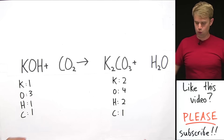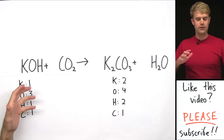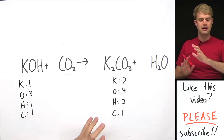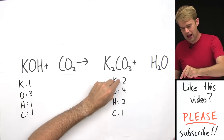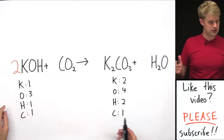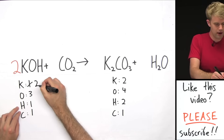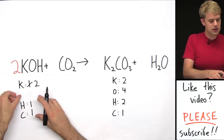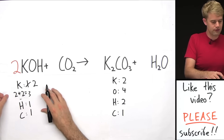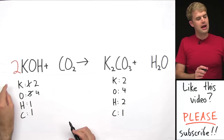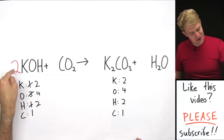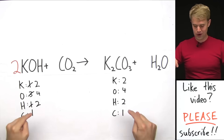I have two potassiums here but only one here, so I'm going to put a two in front of KOH. That gives me two potassiums — two times K. For oxygens, I now have two from the KOH plus the two in CO₂, giving me four. For hydrogen, two times one gives two hydrogens. Putting that two in front changed everything — now I've got two, four, two, one on both sides, and it all balances.